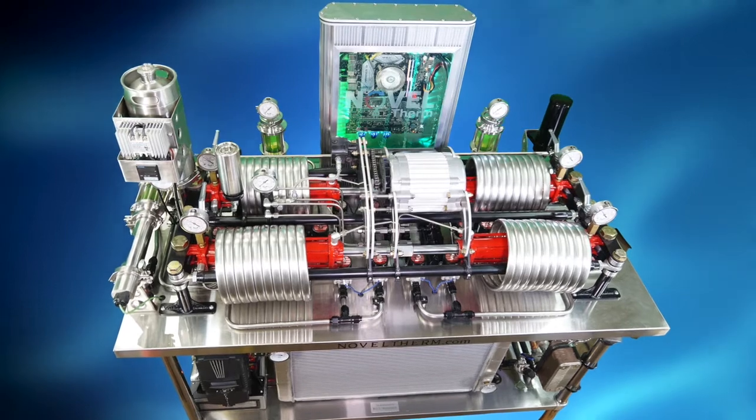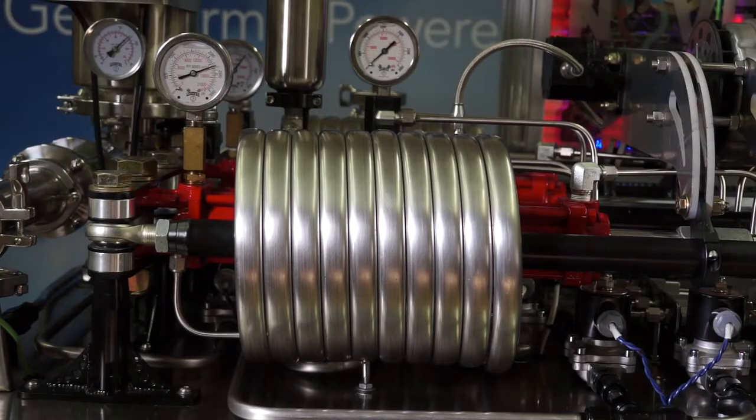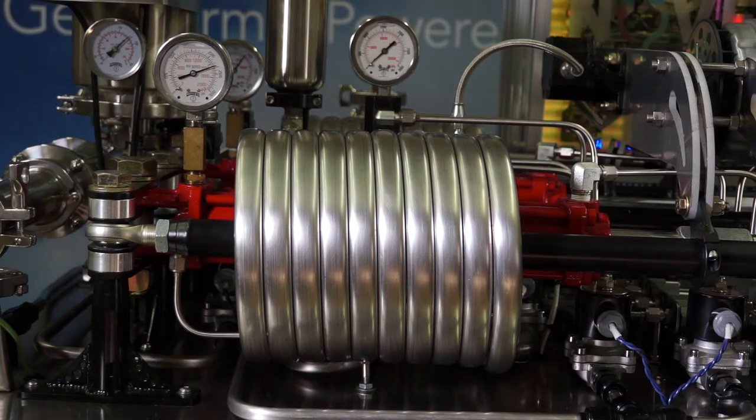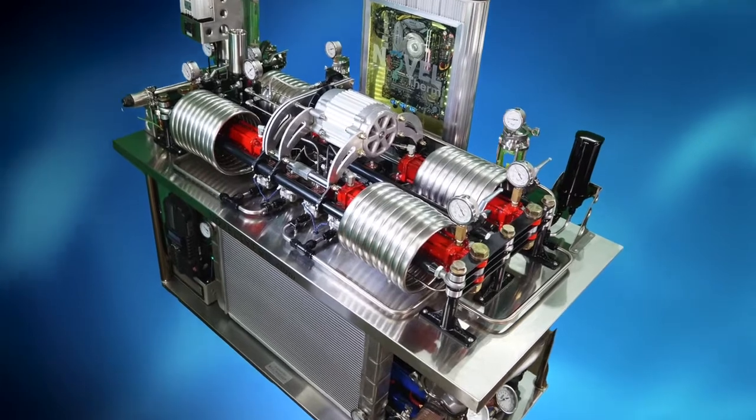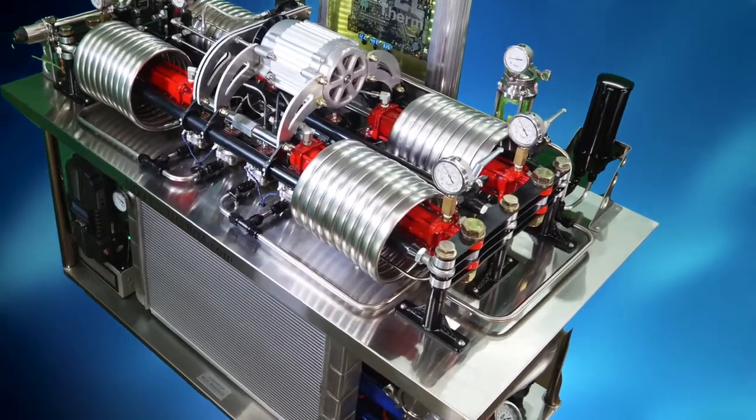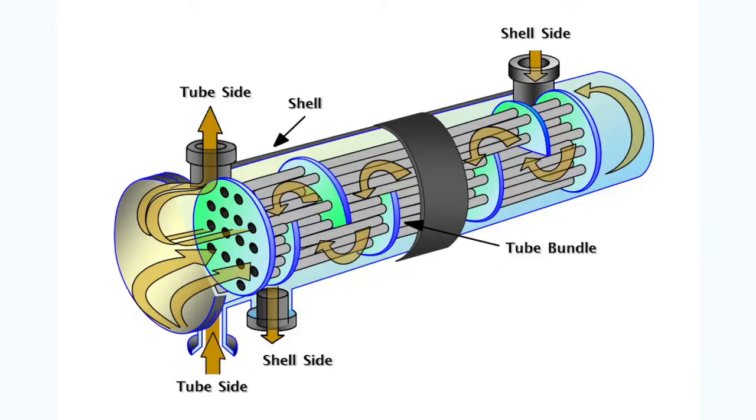Now we come to an important part of our modified Stirling engine assembly. These coils are shell and tube heat exchangers, which are essentially just a tube within a tube. The inner tube contains a special working fluid, and the space between contains hot water and then cold water in a controlled cycle.